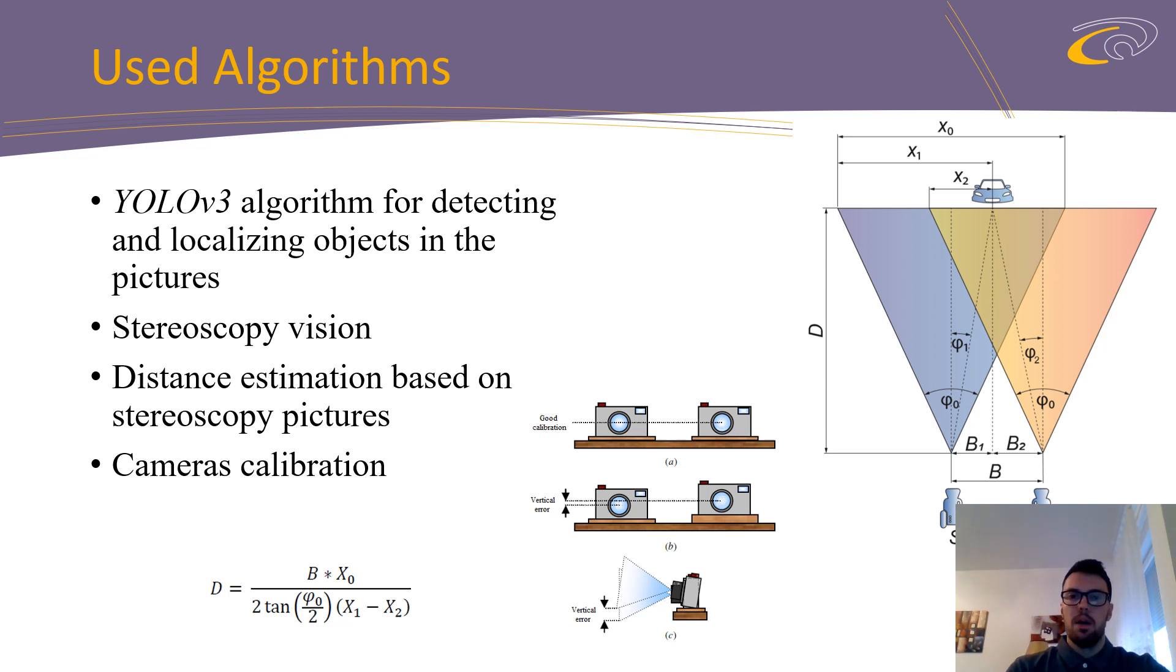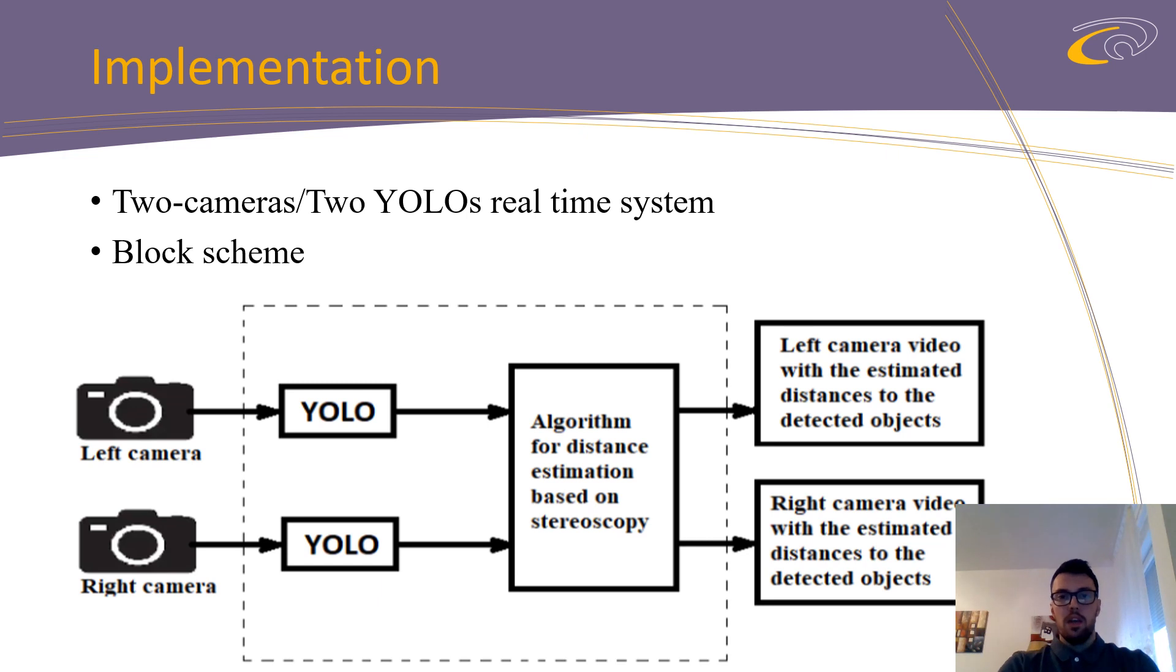Now we can go to the slide about our implementation. Here you can see block scheme of entire algorithm and in the next slides all of the steps will be explained more precisely. We have two cameras which obtain two video streams. First block is YOLO algorithm. Two video streams go to YOLO where objects will be detected. After that detections go to the block for stereoscopy processing and distance calculating. And final outcome of the algorithm are the same two video streams but with boundary boxes and distances added.